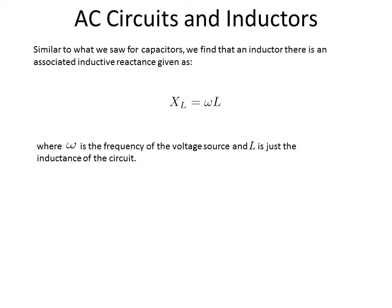Omega is the angular frequency, and the angular frequency is related to the frequency by a factor of 2π. So omega equals 2π times the frequency, such as 60 hertz for your wall if you're in the US.